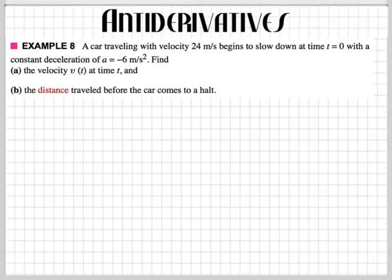So, look at what they gave us. They gave us the velocity right here. It's traveling at a velocity of 24 meters per second. It begins to slow down, and it's decreasing by negative 6. So how are we going to find this? How are we going to find the velocity at any time?